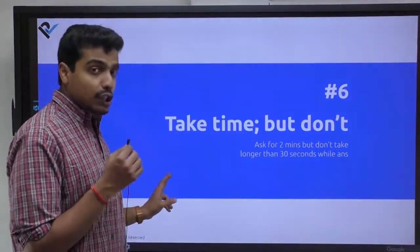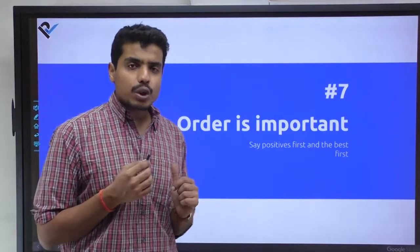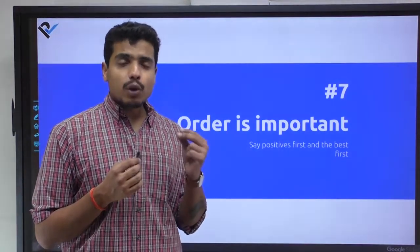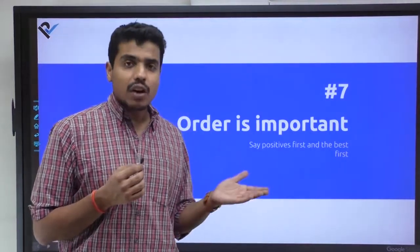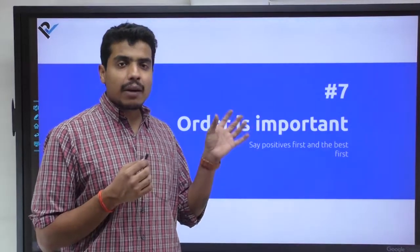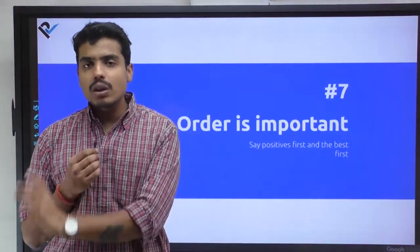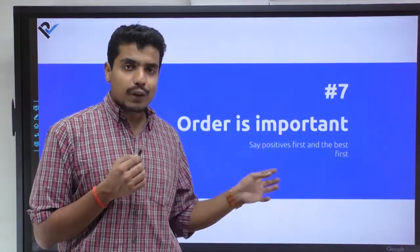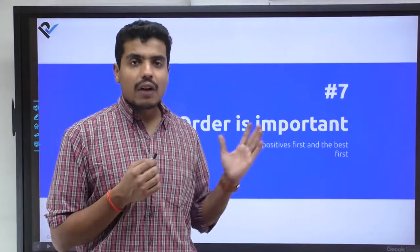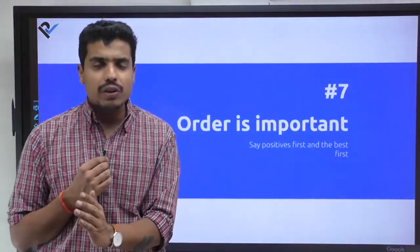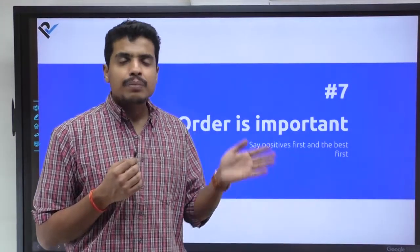Seventh point: order is important. I once read a social psychology experiment on order. There were two groups given qualities about a random person, both good and bad. In one group they wrote good qualities first then bad qualities. In the other group, bad qualities first then good qualities. The group with whatever quality first had that impression. Group one with good qualities first saw the person as good. Group two with bad qualities first saw the person as bad.